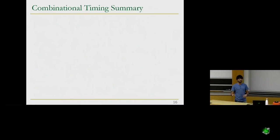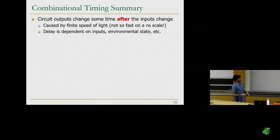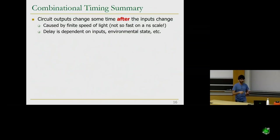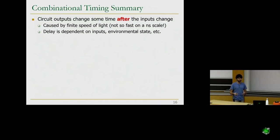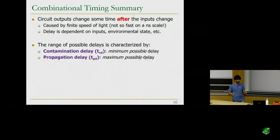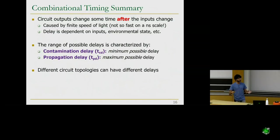To summarize combinational timing: circuit outputs change sometime after the input changes, caused by the finite speed of light, gate design, different inputs, and environmental conditions. This leads to a range of possible delays characterized by a minimum contamination delay and a maximum propagation delay. Different circuit topologies can have completely different delays.